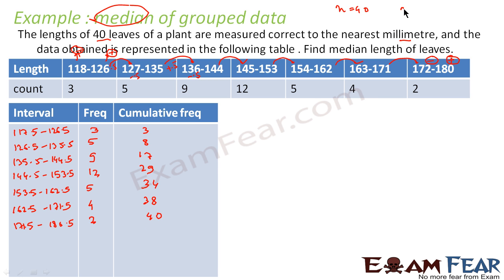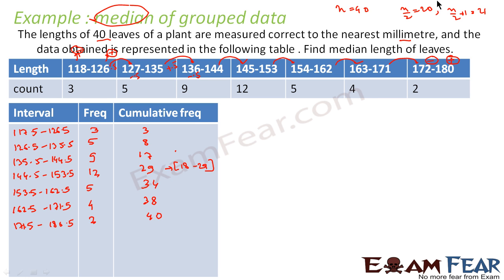n divided by 2 is 20 and n/2 plus 1 is 21, so I need to find the class containing the 20th and 21st terms. Up to the previous class the cumulative frequency is 17, meaning values 18 through 29 fall in the next class — so both the 20th and 21st terms are in that class. That is my median class.